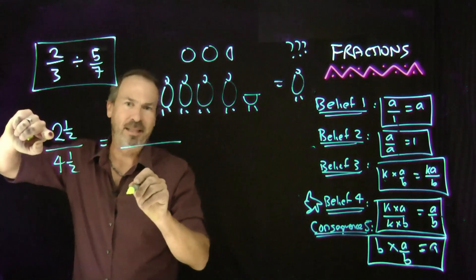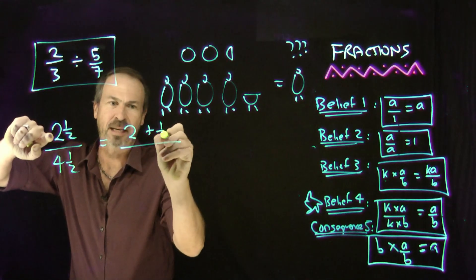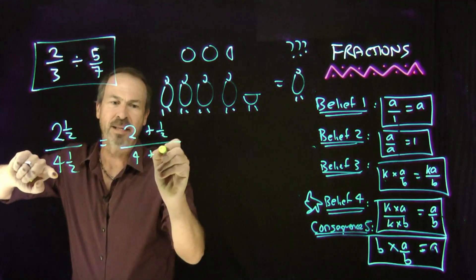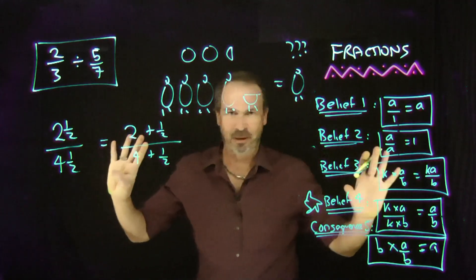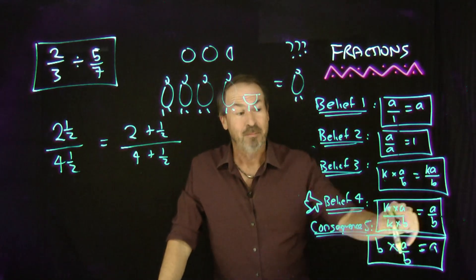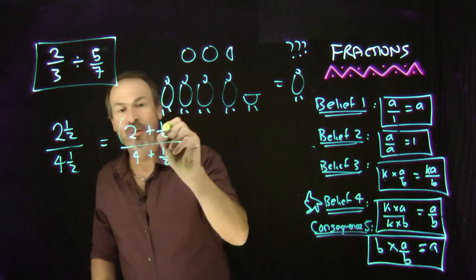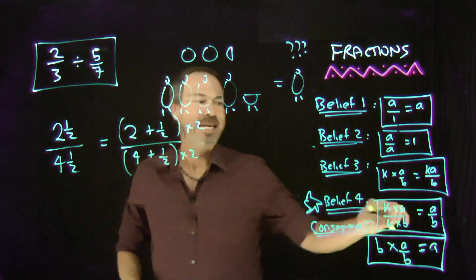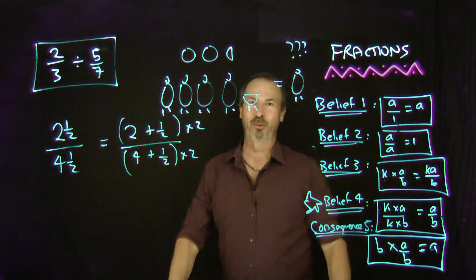Alright, so let me show you what I mean. First of all, let's be really clear about the mixed numbers. They really have a plus sign in there. It's really 2 plus a half. This is really 4 plus a half. And the way to get rid of halves, I want to double everything. By belief number 4, if I double that top and I also double the bottom, nothing changes. It's still the same quantity.